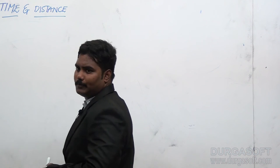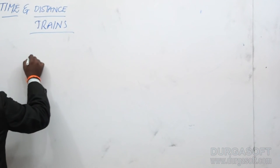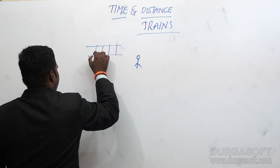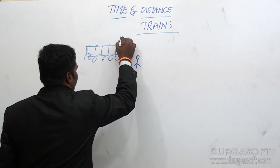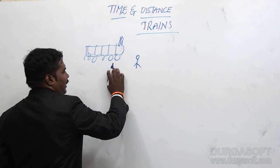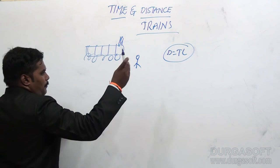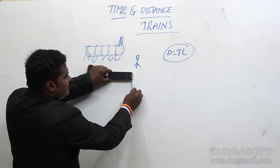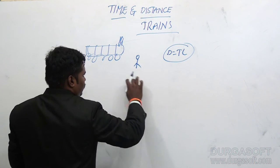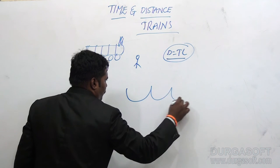In train problems, we use the same time and distance concept. To cross a stationary man, tree, pole, or any point object, the train only needs to cover a distance equal to its own length. That is: distance = train length, when crossing a stationary point object.